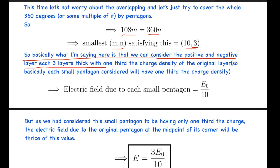what I'm saying here is that we can consider the positive and negative layers each three layers thick, because n comes out to be three. So basically, we are stacking the pentagons and three layers of 360 degrees have formed. So we can consider the original layer to be consisting of three layers with one-third the charge density of the original layer.